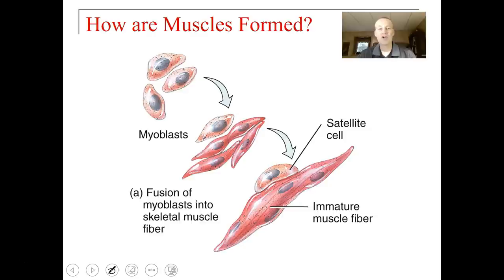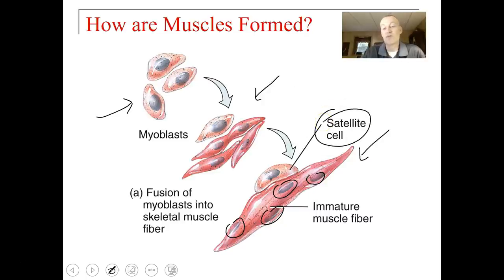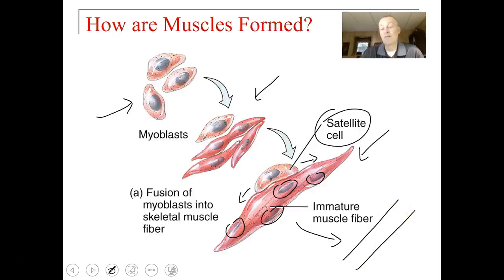Muscle cells are formed embryonically from cells called myoblasts. These myoblasts come together and fuse to form an immature muscle fiber. The reason muscle cells are multinucleated is because they're made of myoblasts that fused and left their individual nuclei inside the one muscle cell. Some myoblasts become satellite cells that sit on the outside of muscle cells and help repair them if damaged. Once there are mature muscle fibers in an adult, they do not undergo reproduction, so you're born with all the muscle cells you're ever going to have.